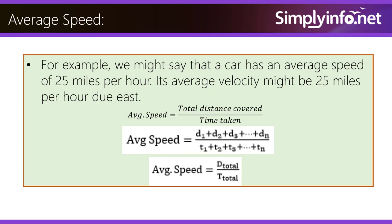Average speed is equal to total distance covered by time taken. Average speed equals d1 plus d2 plus d3 plus dn divided by t1 plus t2 plus t3 till tn. So average speed equals d total by t total.